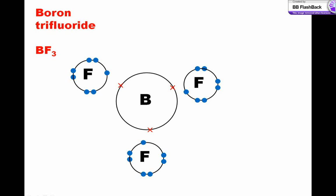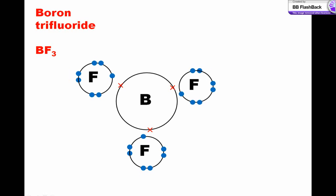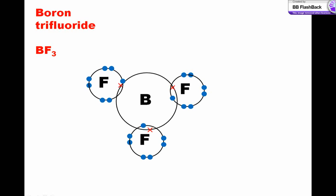The final example we'll look at is boron trifluoride, BF3. Three bonding pairs of electrons result with no lone pairs.